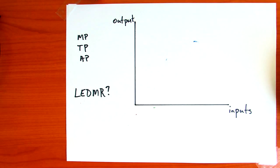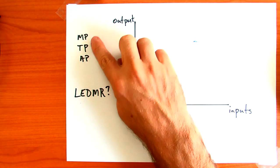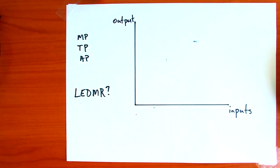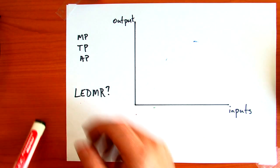In this video, we're going to quickly review how to draw marginal production, total production, and average production. This is just sketching, but that's often how we want to do it in an economics course.